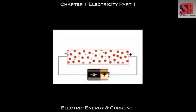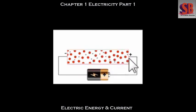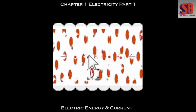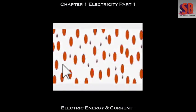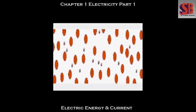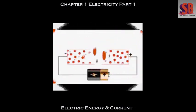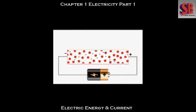Now, if this metal conductor is connected across a voltage source, these free electrons come under an electric field and an electric force acts on them. As the electrons are negatively charged, they will be accelerated towards the positive end of the conductor. As a result, these free electrons drift towards the positive end of the metal conductor. As these electrons have negative electrical charge, there is a flow of negative charge towards the positive end.